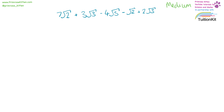7 square root 2 plus 3 square root 3 minus 4 square root 5 minus 4 square root 2 plus 2 square root 3. 7 square root 2 minus 4 square root 2 is 6 square root 2. 3 square root 3 plus 2 square root 3 is plus 5 square root 3, and then minus 4 square root 5 on its own.